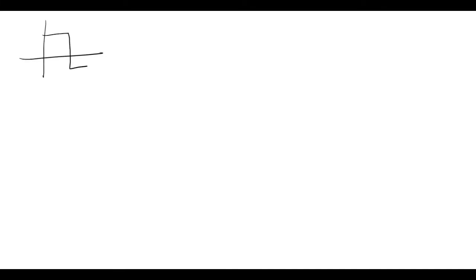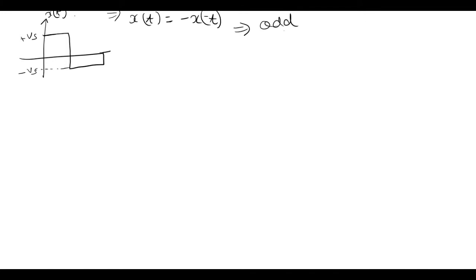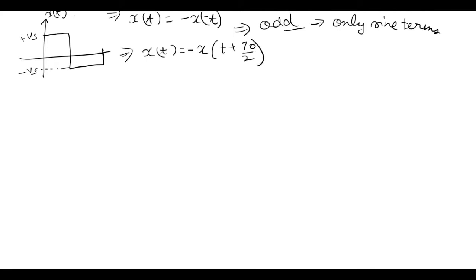Now let's take an example of this function x(t), which is a square wave with values minus Vs and plus Vs. Clearly x(t) equals minus of x(minus t), so it has odd symmetry — only sine terms will be present. Also x(t) equals minus of x(t plus T0 by 2), so if this is T0 then this would be T0 by 2, meaning odd harmonics will be present.